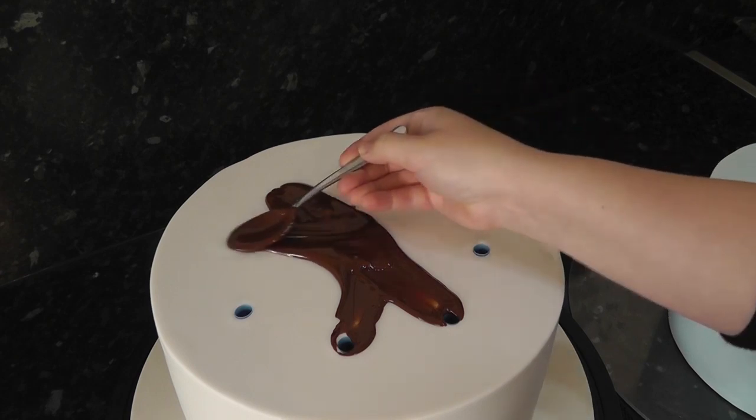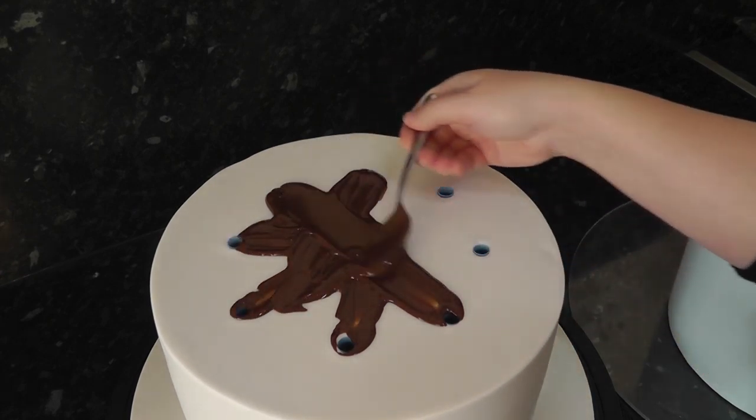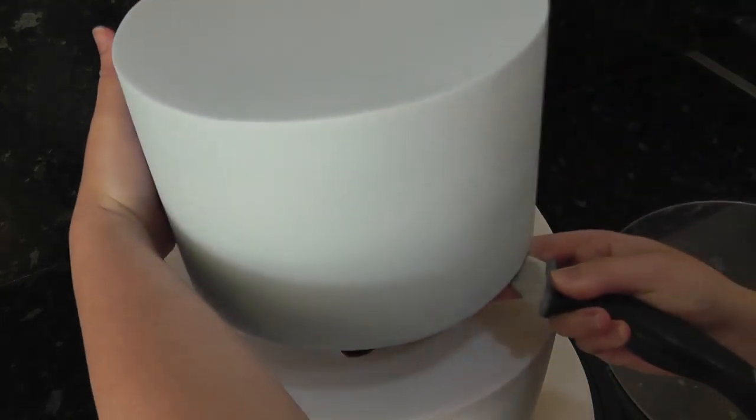To stick your cakes together you can use ganache, melted chocolate, or royal icing. This one is melted chocolate as I had run out of ganache, and you will see why I prefer the ganache in a second. Carefully place your 8 inch cake on top, which is the only one covered in a pale baby blue.